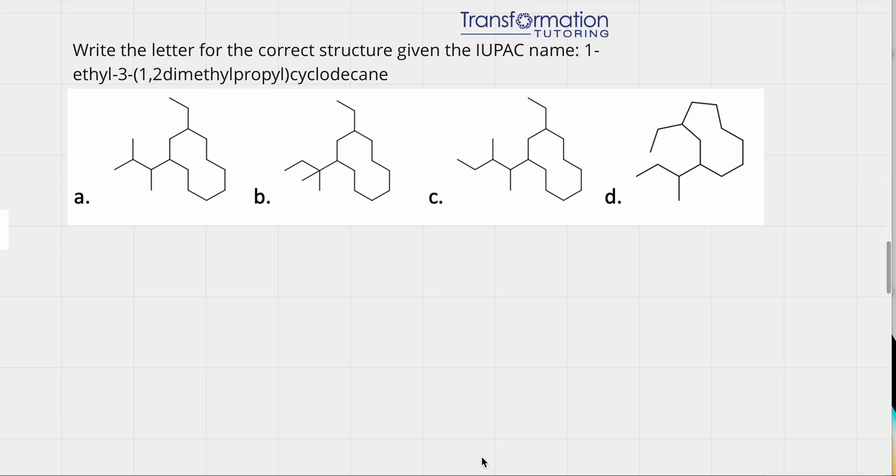Write the letter for the correct structure given the IUPAC name 1-ethyl-3-(1,2-dimethylpropyl)cyclodecane. So in order for us to choose the right structure, we have to look at the very end of the name which represents the parent chain. And here it says cyclodecane.